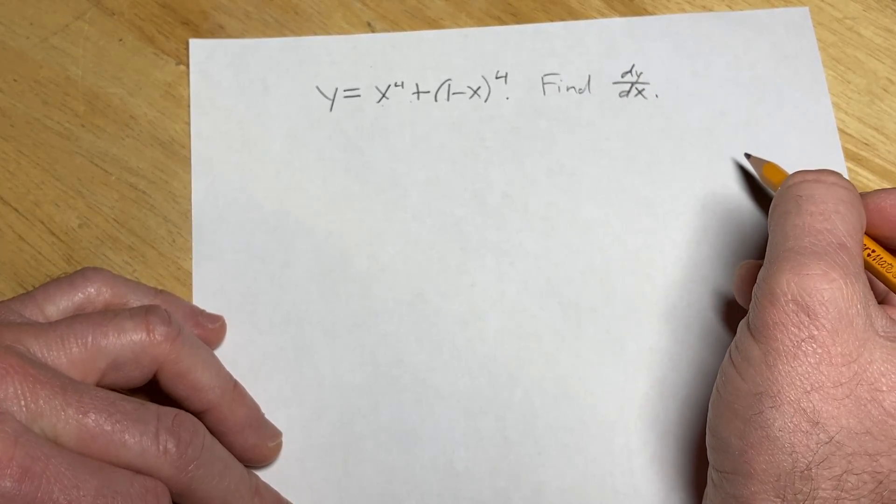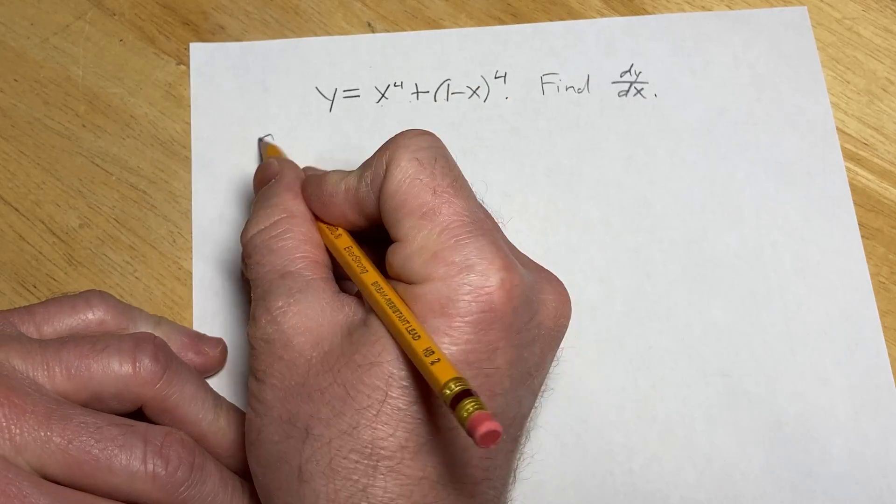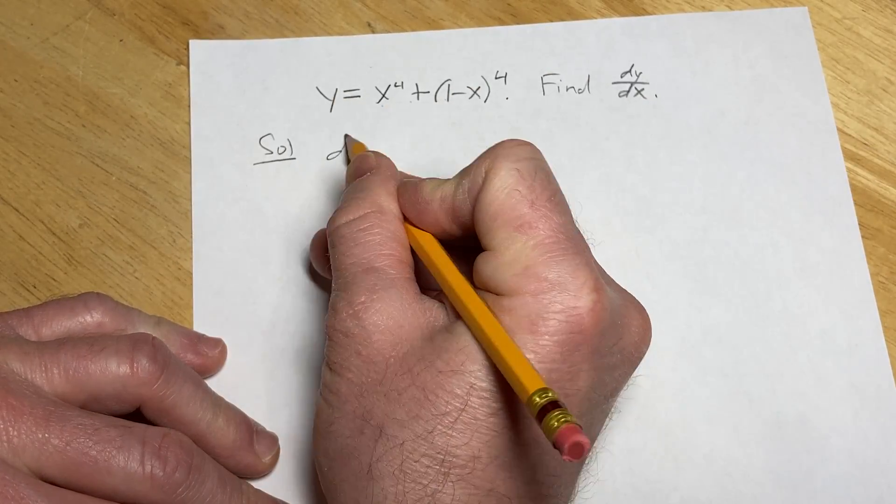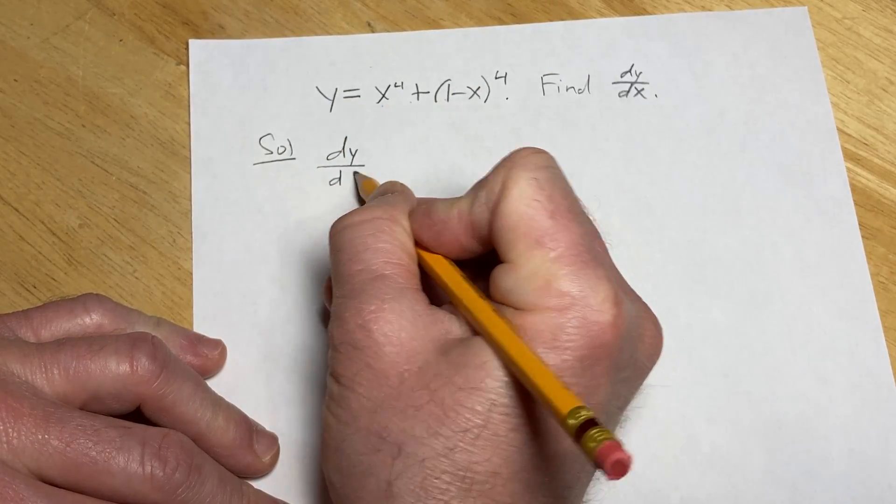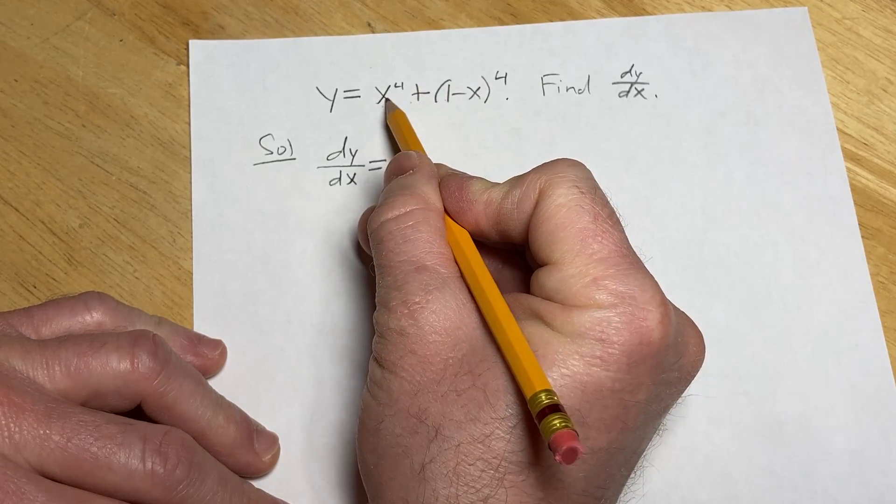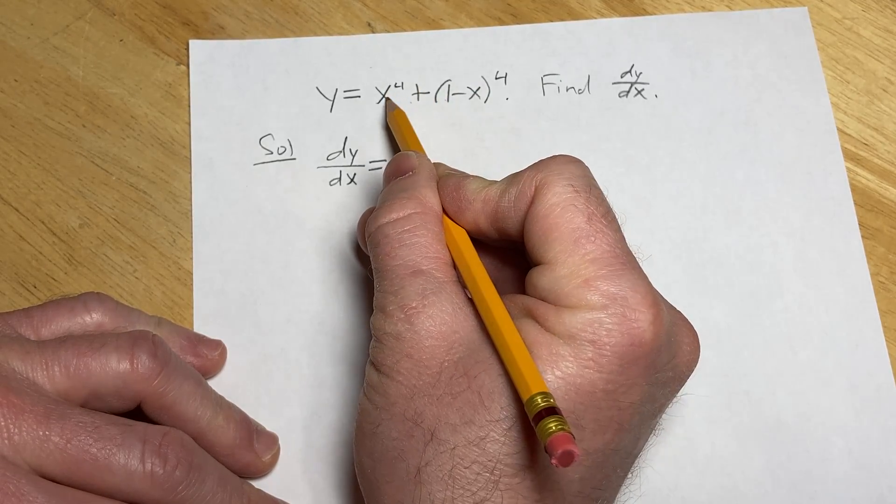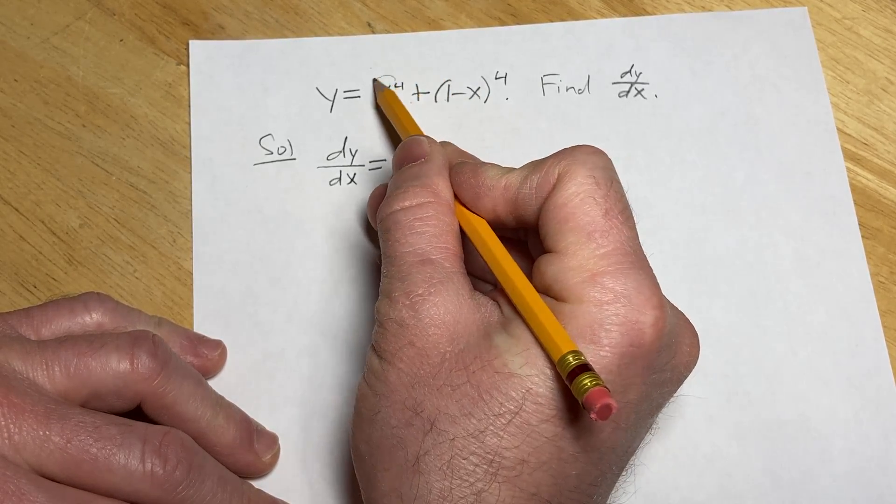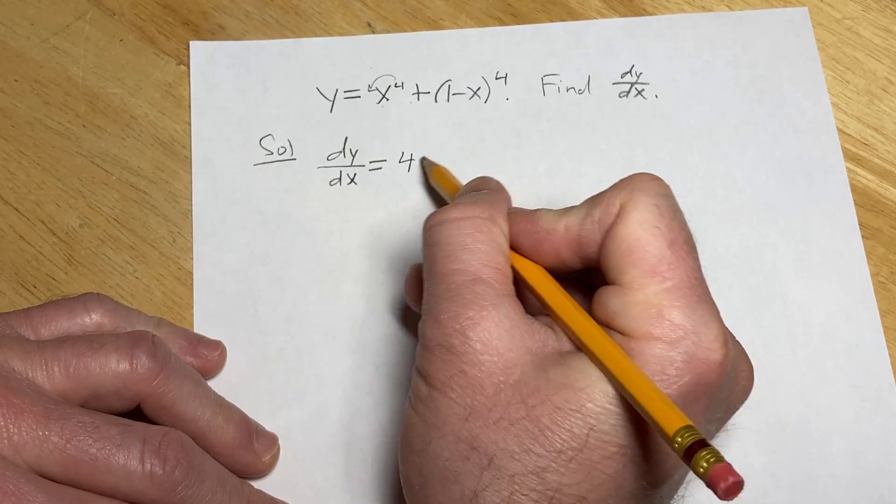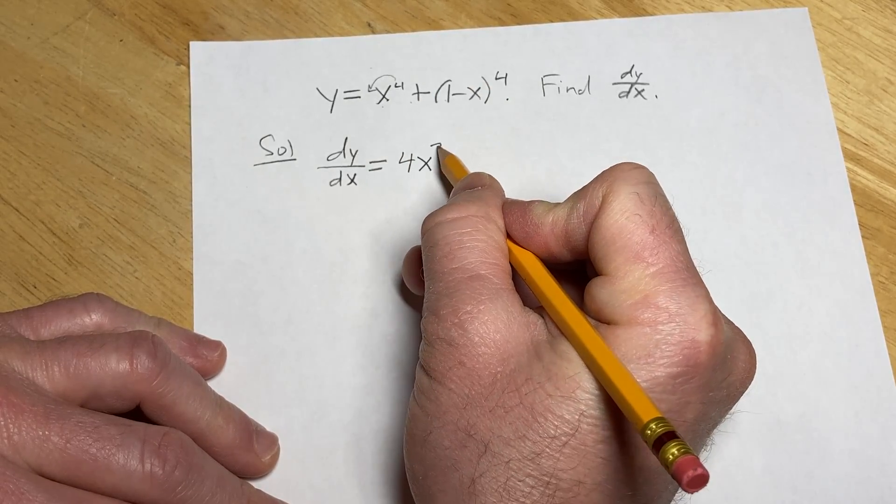So to find dy dx in this problem, we're just going to take the derivative. So dy dx, that's the derivative of y, is equal to... To find the derivative of x to the fourth, we can use what's called the power rule. We'll bring down that 4, subtract 1 from the exponent, that'll give us 4x cubed.